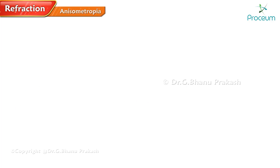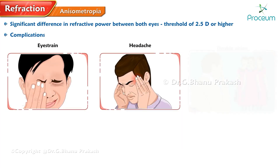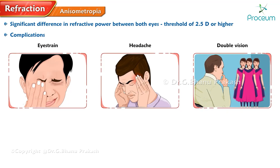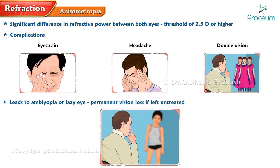The last condition we'll cover is anisometropia. Anisometropia is a condition where there is a significant difference in refractive power between both eyes, with a threshold of 2.5 diopters or higher. This condition can lead to several problems such as eye strain, headaches, and double vision. In some cases, anisometropia can also lead to amblyopia or lazy eye, which can cause permanent vision loss if left untreated. Thank you for listening to this module about refraction.